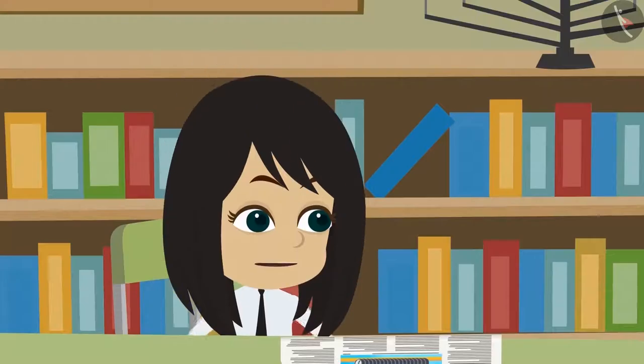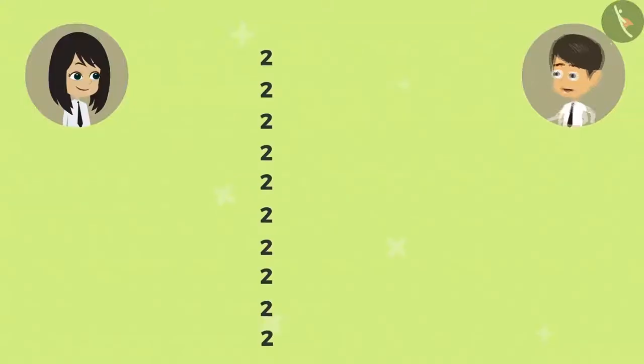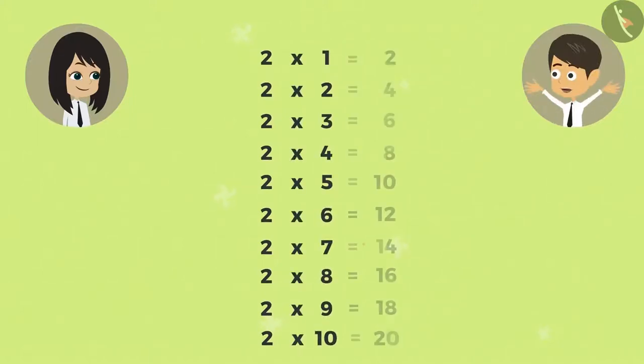What is a Multiplication Table? The list obtained when multiplying a number with 1 to 10 is called the Multiplication Table of that number.